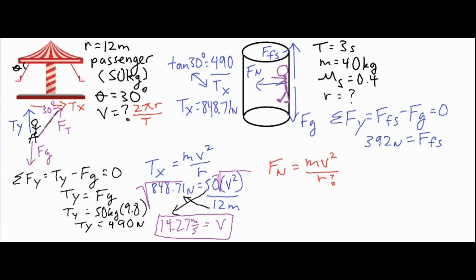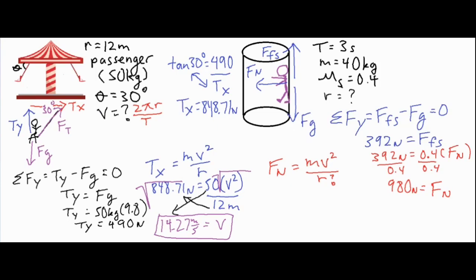We're trying to find the radius, but we don't have enough information yet. Since friction involves the normal force, and we're given the coefficient of static friction, we can write: 392 newtons = 0.4 × Fn. The force of friction always equals mu times the normal force. Solving for Fn gives us 980 newtons.